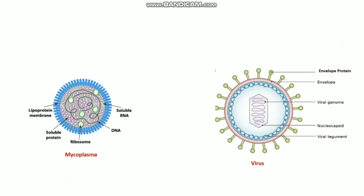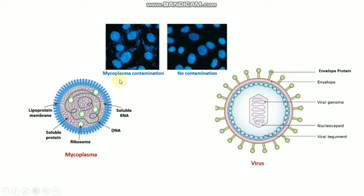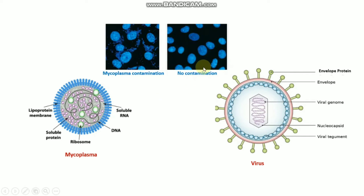DAPI is also popular for labeling cell cultures to detect DNA of contaminating mycoplasma or virus. As you can see in this picture, this is mycoplasma contamination, so the mycoplasma DNA is stained with DAPI. Here, there is no contamination and no background noise — you can compare these two pictures: no contamination versus mycoplasma contamination.